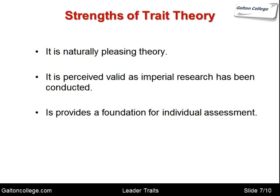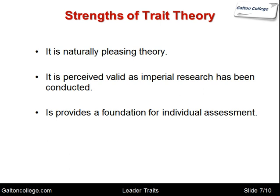Empirical research has been conducted in this area. The theory also provides a foundation for individual assessment, so there are a number of so-called strengths. On the weaknesses side, the list of traits is very long — we can identify all sorts of traits: physical traits like eye colour or hair colour, as well as psychological features such as emotional stability, quantitative ability, and creative capacity. It's a very long list of traits.